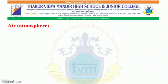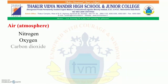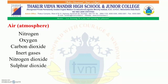The air in the atmosphere around the earth contains nitrogen, oxygen, carbon dioxide, inert gases, nitrogen dioxide, sulphur dioxide, water vapour and dust particles.